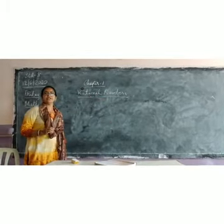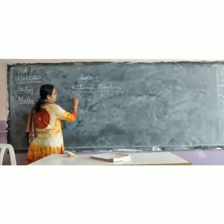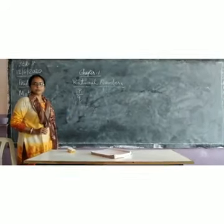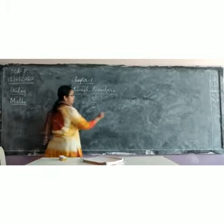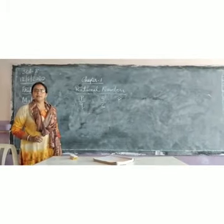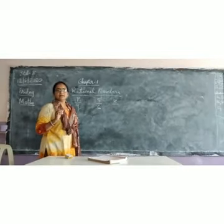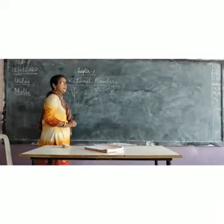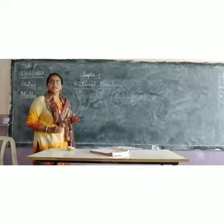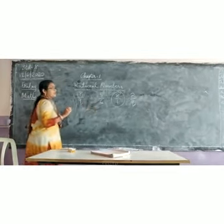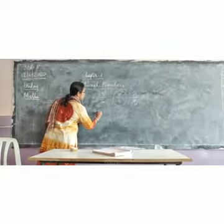Before we move on to the properties of rational numbers, I would like to say something more. Rational numbers are any numbers which are in the form of P upon Q. For example, 5 upon 6 is a rational number. Can we call any integer a rational number? Yes — because any number has 1 as its denominator. So when we put 1 in the denominator, it takes the form of P upon Q, making it a rational number.